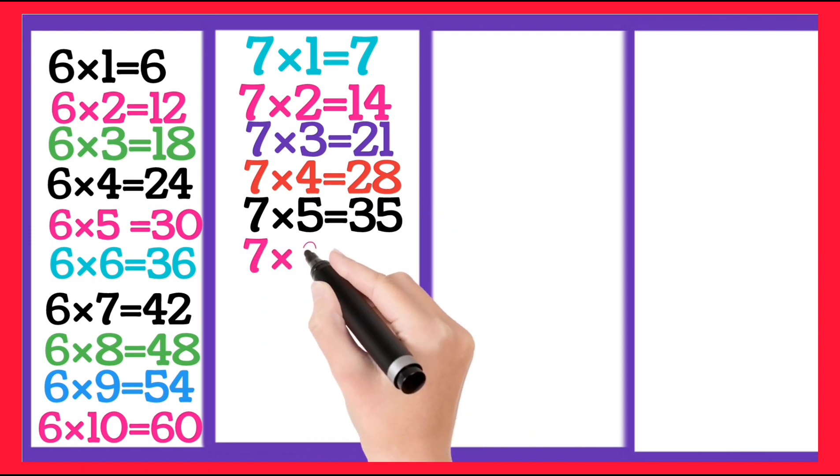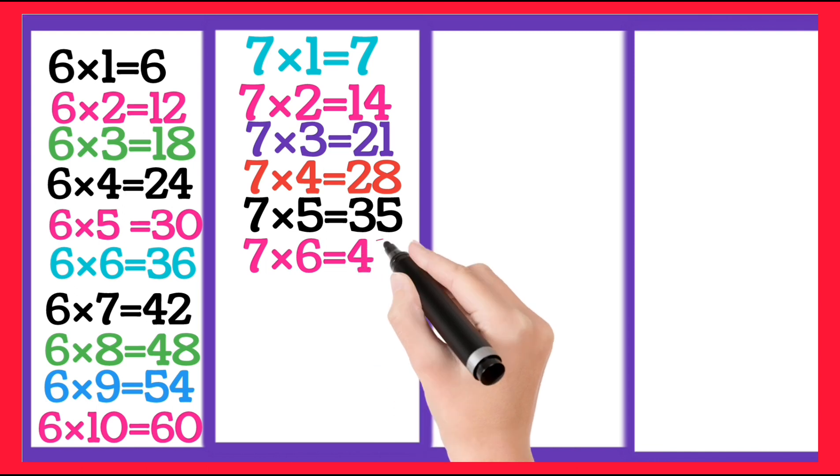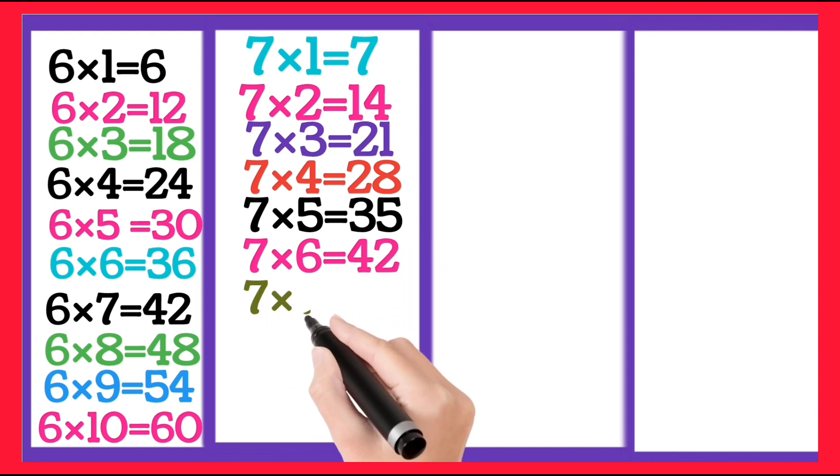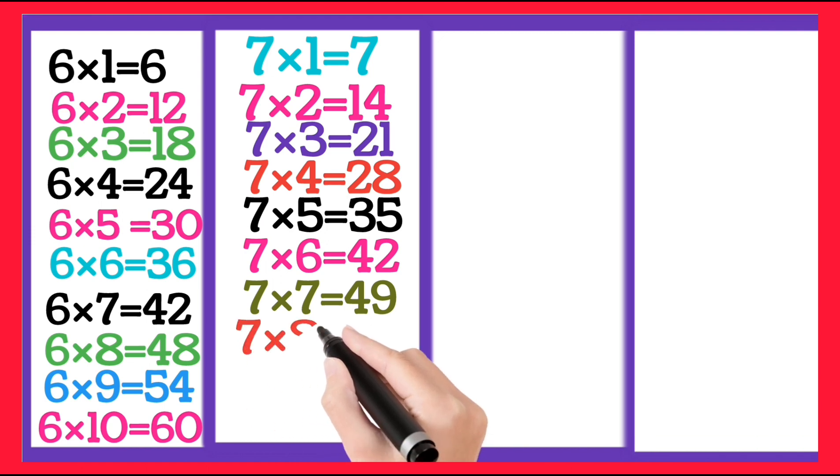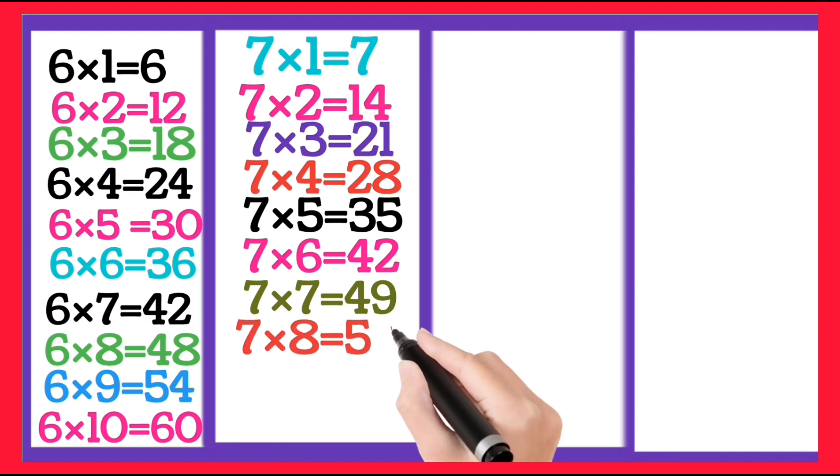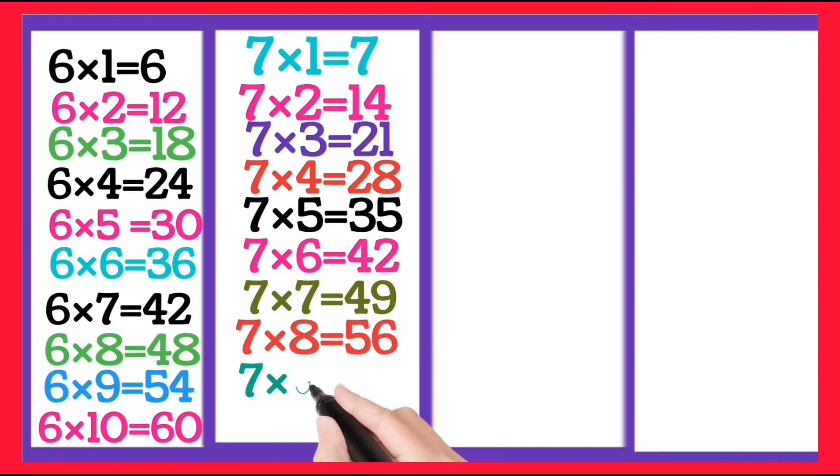7 5's are 35, 7 6's are 42, 7 7's are 49, 7 8's are 56, 7 9's are 63.